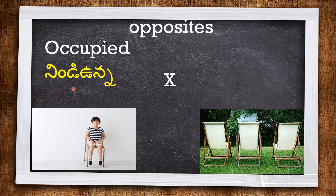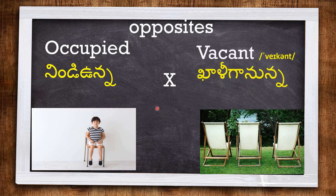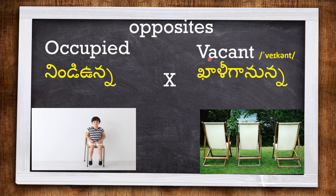OCCUPIED means something is in use. This chair is occupied by this boy, whereas all these three easy chairs are vacant. VACANT means empty and available.